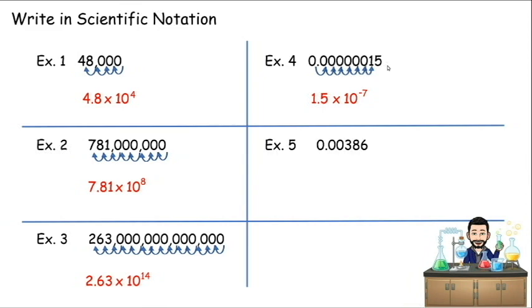Try that. 1, 2, 3 places gives me 3.86 × 10 to the... Well, I moved it 3 places. It's going to be to the third power. But I need this 3.86 to turn into something really small. So I'm going to make this 10 to the negative third.